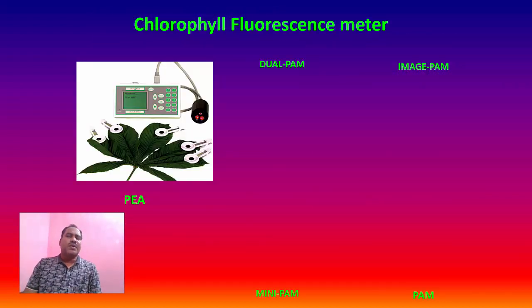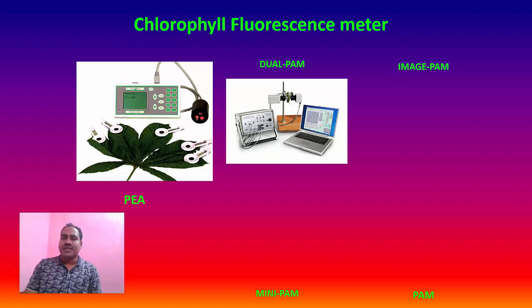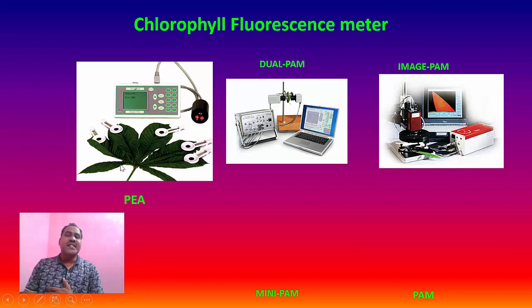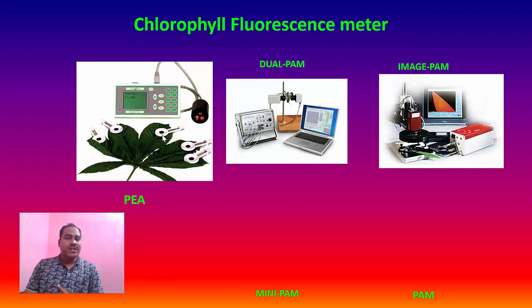Chlorophyll fluorescence can be measured by different types of instruments developed by different companies. One of the most accessible instruments is known as the plant efficiency analyzer, developed by Hansa Tech. In this instrument, it can excite the electrons by using diodes. When it emits energy in the form of photons to the leaf, the leaf is excited and emits fluorescence. That emission is recorded by this instrument and translated into different types of biophysical processes.